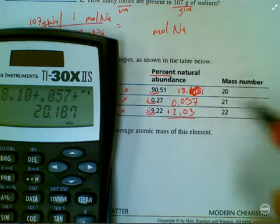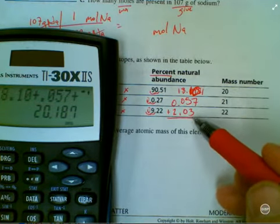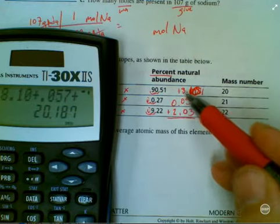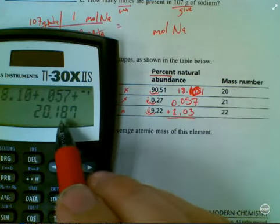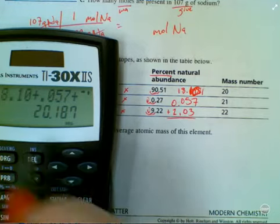Now, how many significant figures should I use? Now, I'm adding here, so I have two places past the decimal, three places past the decimal, two places past the decimal. So my answer is going to be two places past the decimal. So I'm going to go 20.19.